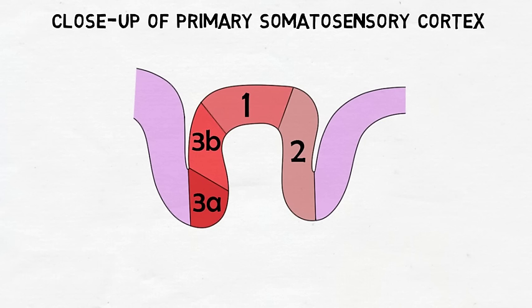Area 3B is primarily concerned with basic processing of touch sensations, while area 3A responds to information from proprioceptors.